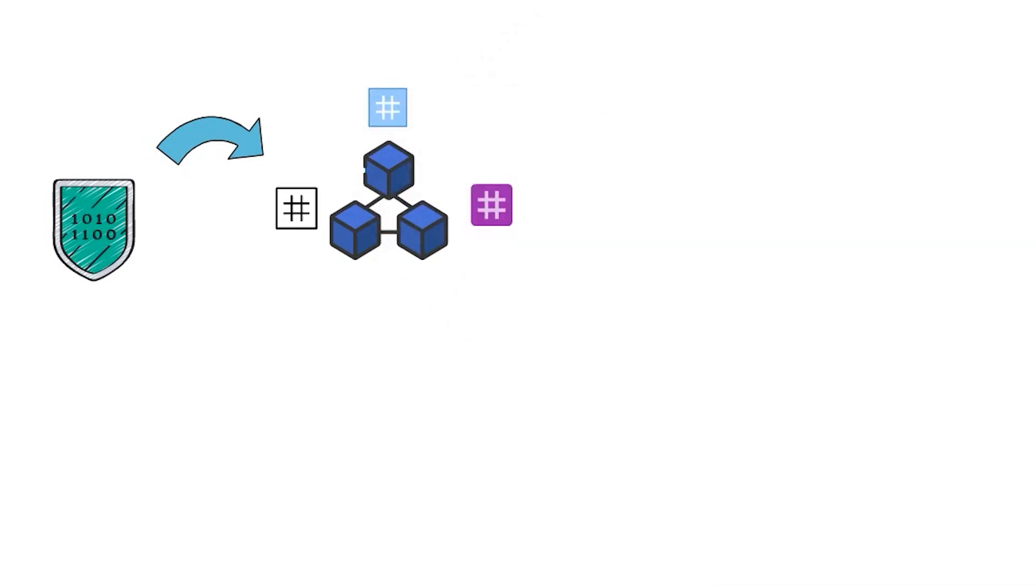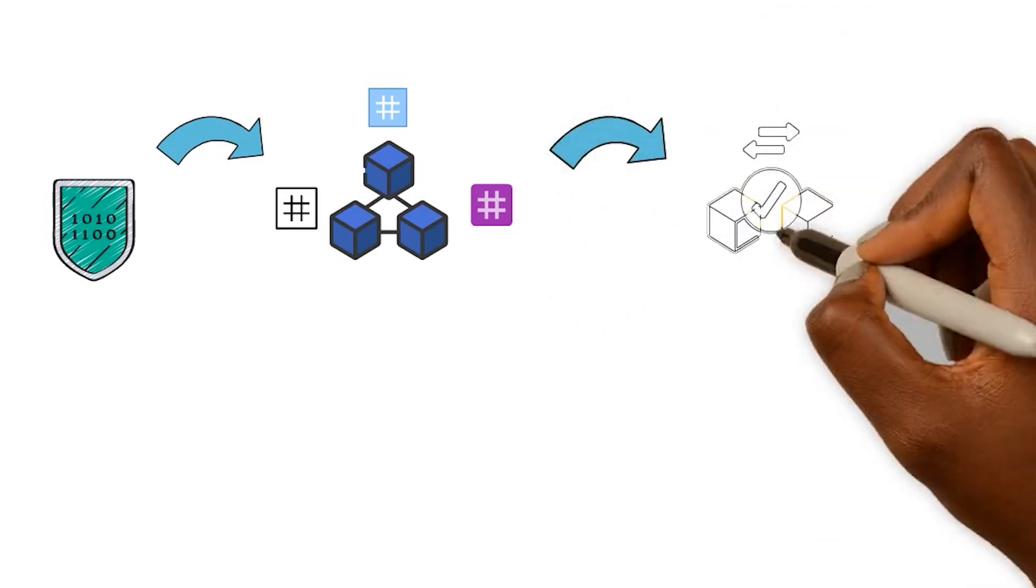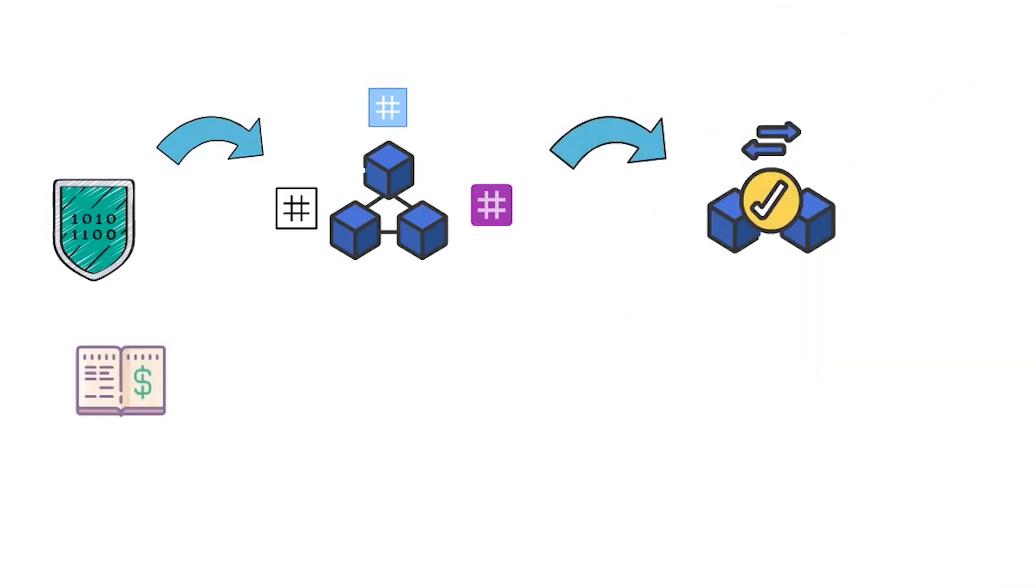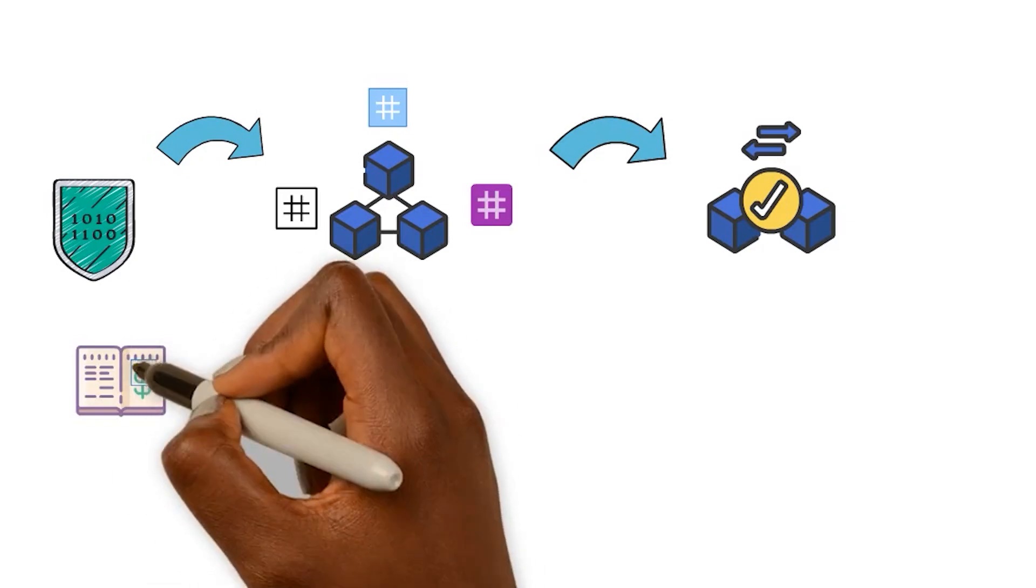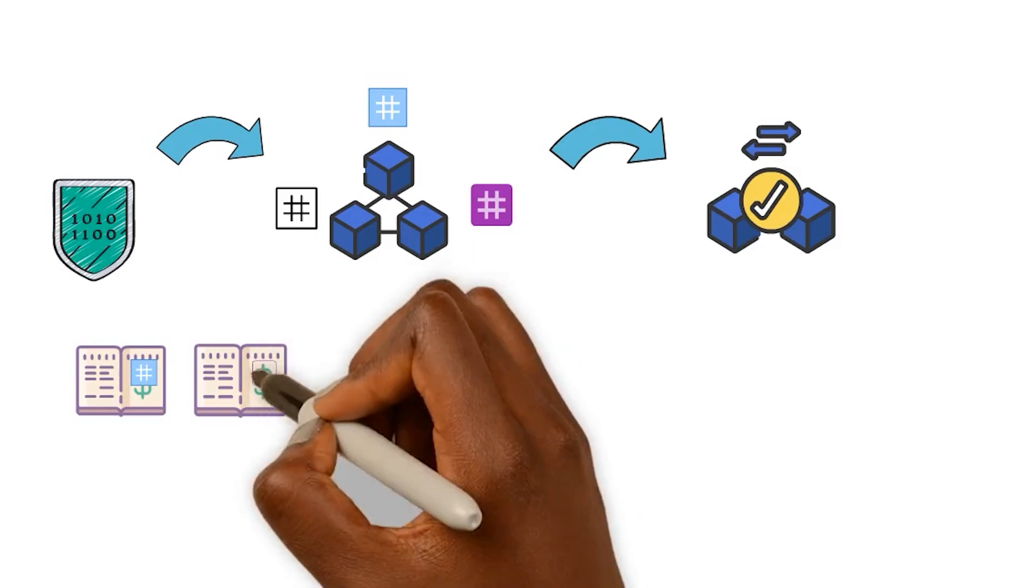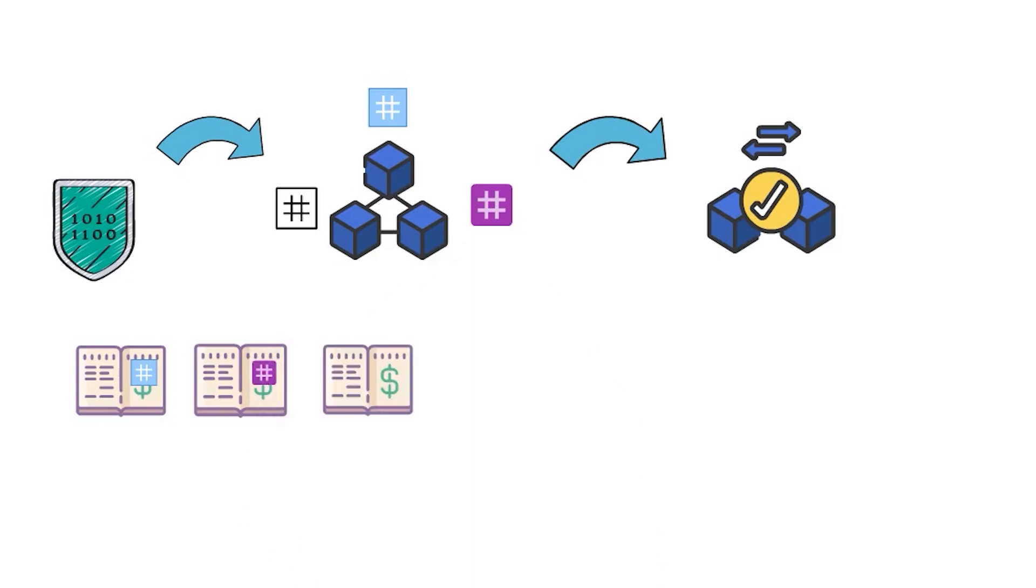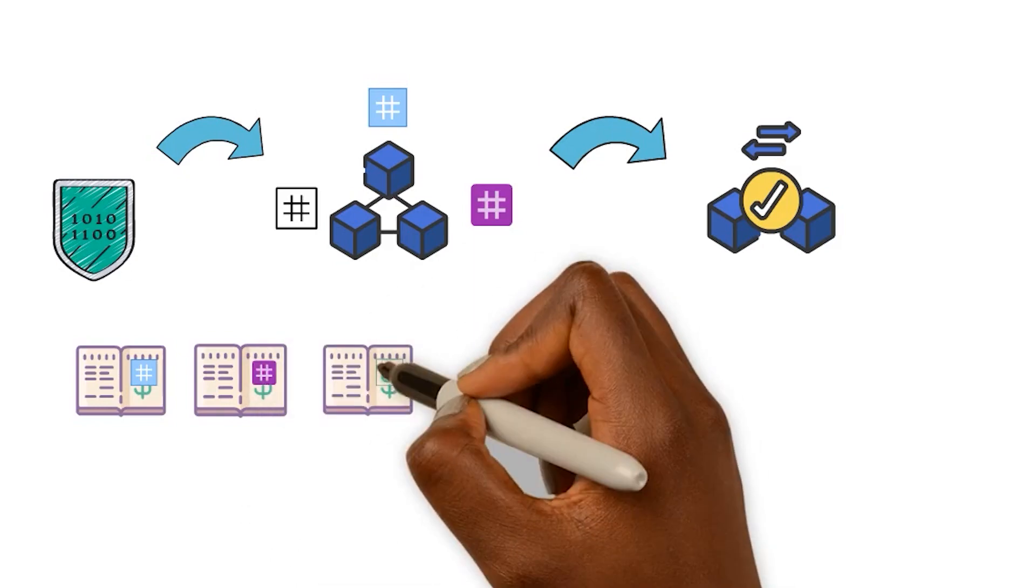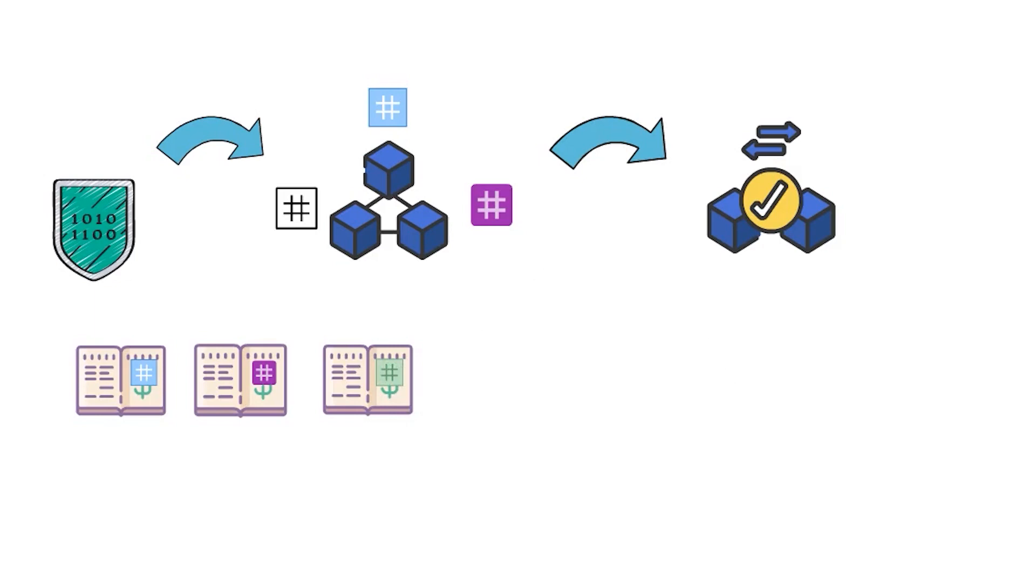This is how a blockchain keeps track of transactions and allows new ones to be created without having to go through an intermediary like a bank or a government. Each transaction has its own unique hash, which acts as an approval process for every new block that gets added on top of it. It also comes with an address as well as a timestamped receipt once the transaction is complete.